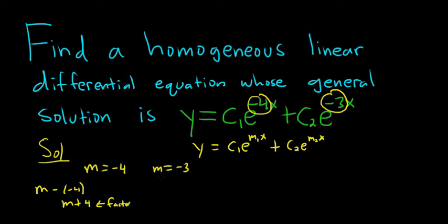Same thing here. Here would be m minus negative 3. So that would mean that m plus 3 is a factor of the characteristic equation. So if m plus 4 is a factor and m plus 3 is a factor, then we can form the characteristic equation by multiplying them together.